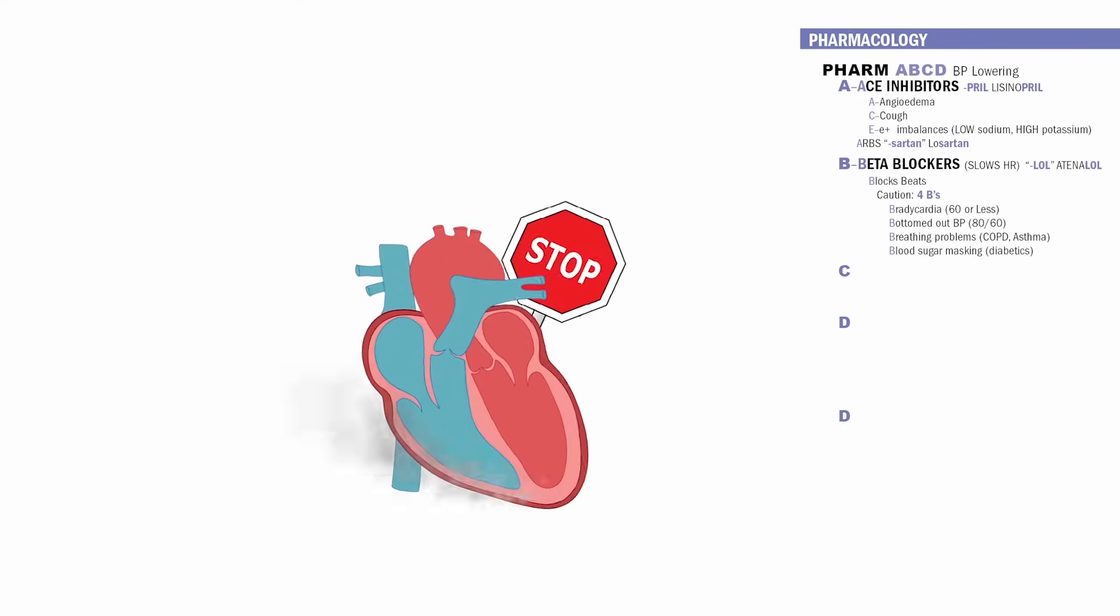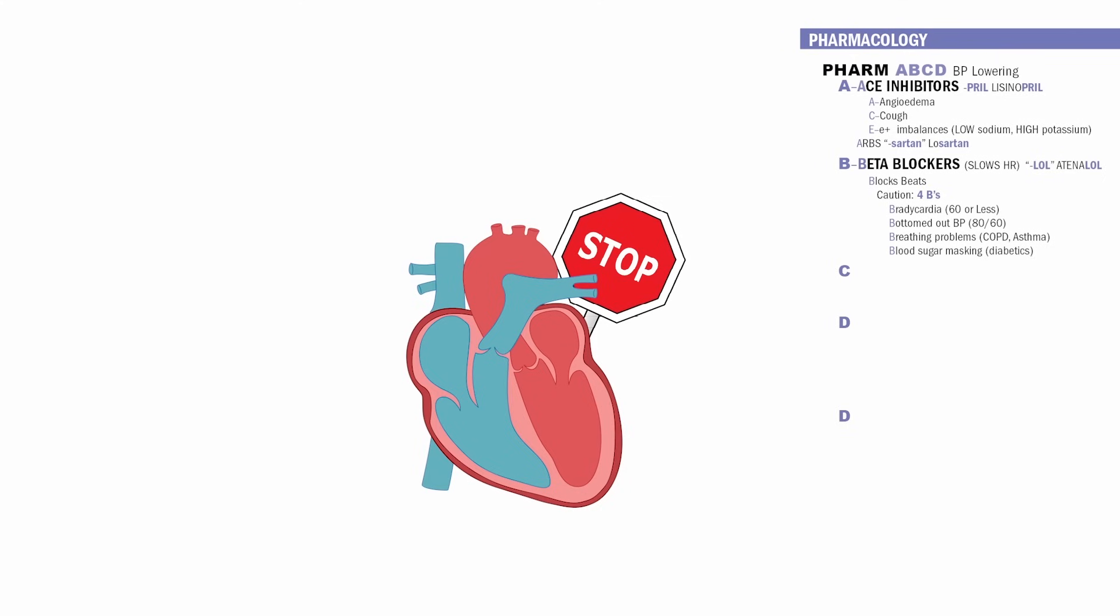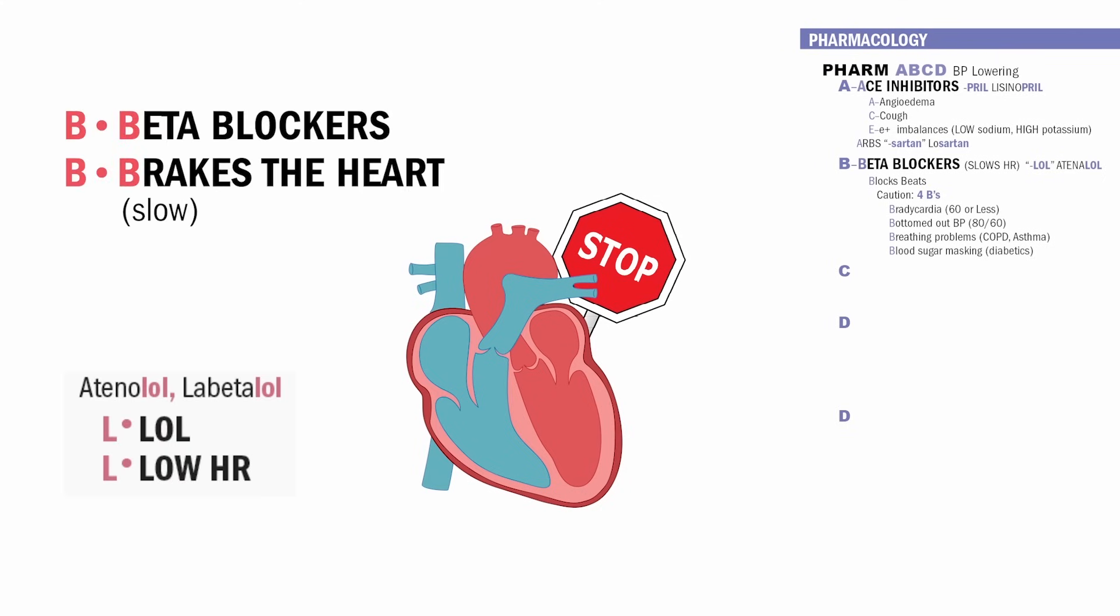B is for beta blockers. These slow the heart rate. They end in -lol like atenolol. Think B for blocks beats or B for brakes on the heart. Or since it ends in lol, think L for lower heart rate. Big caution before giving beta blockers that block the beats and slow the heart rate. Remember the four Bs.